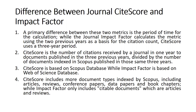If we talk about Impact Factor, it calculates the metric using the two previous years as a basis for the citation count, while CiteScore uses the last three years. CiteScore is the number of citations received by a journal in one year for documents published in the three previous years, divided by the number of documents indexed in Scopus published in those same three years. This is basically the formula for calculating CiteScore.